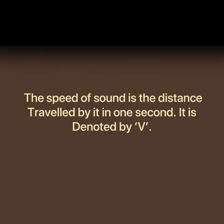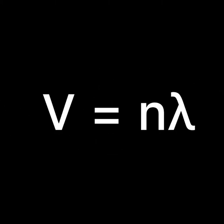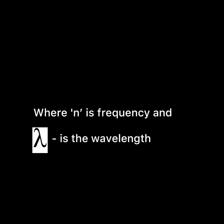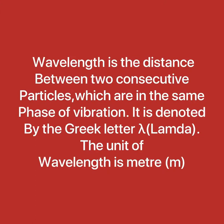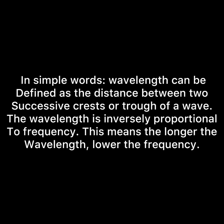The speed of sound is the distance traveled by it in one second. It is denoted by v and represented by the expression v = n × λ, where n is frequency and λ is wavelength. Wavelength is the distance between two consecutive particles which are in the same phase of vibration. It is denoted by the Greek letter lambda and its unit is meter. In simple words, wavelength is the distance between two successive crests or troughs of the wave.